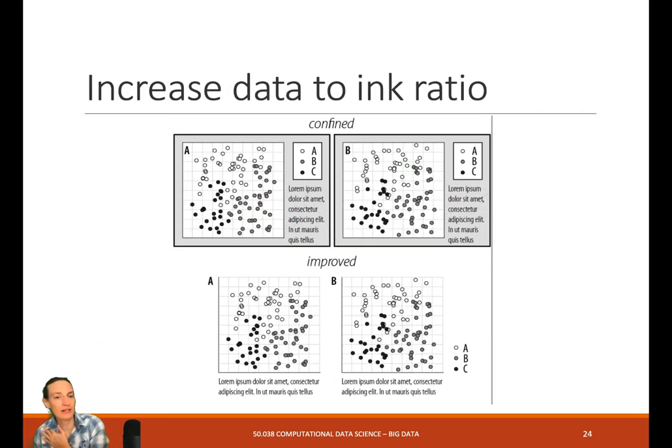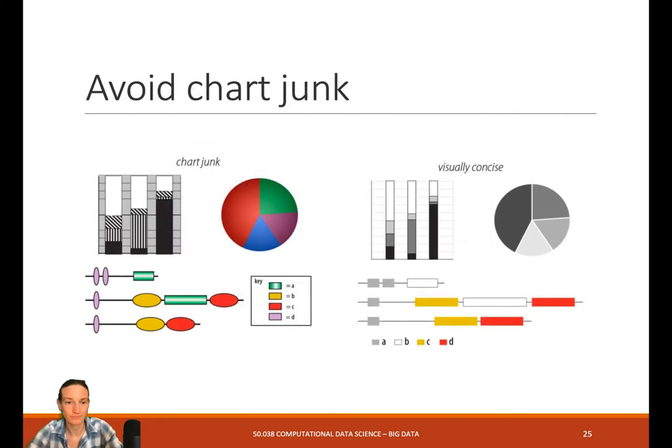So another design principle - increase your data to ink ratio. What does that mean? The same graphs on the top and the bottom, depicting the exact same thing. The top one has a lot of ink, right? It has the frame, it has the background. It's really all not necessary. It has a little border around the legend. Not necessary. So make it just nice, so the data really pops up. Less ink, if you can. Basically, avoid unnecessary containment of legends and borders around graphs, if you really don't need to. Avoid heavy axes. Avoid error bars and glyphs, if you don't need them.